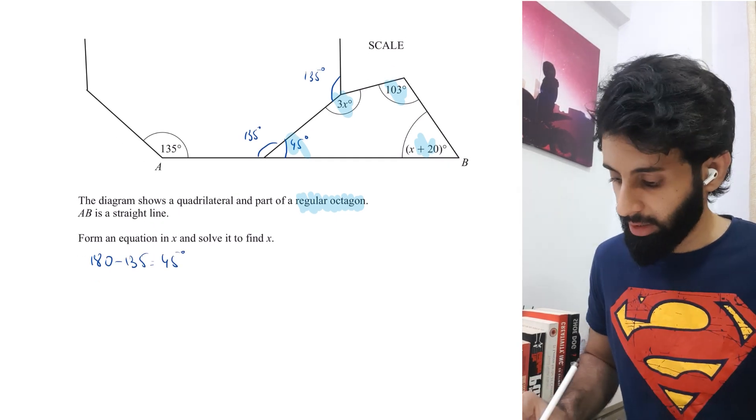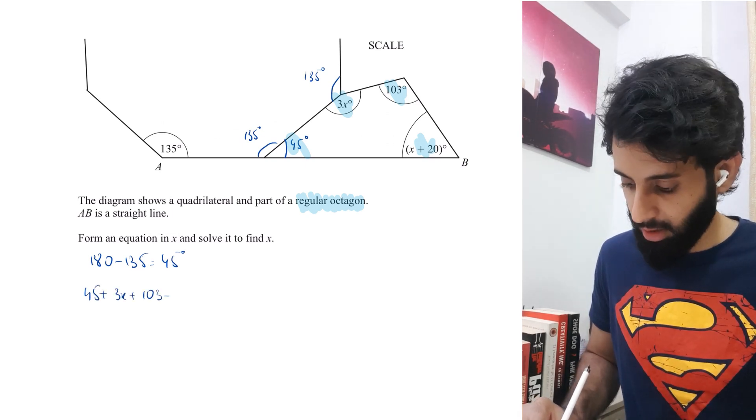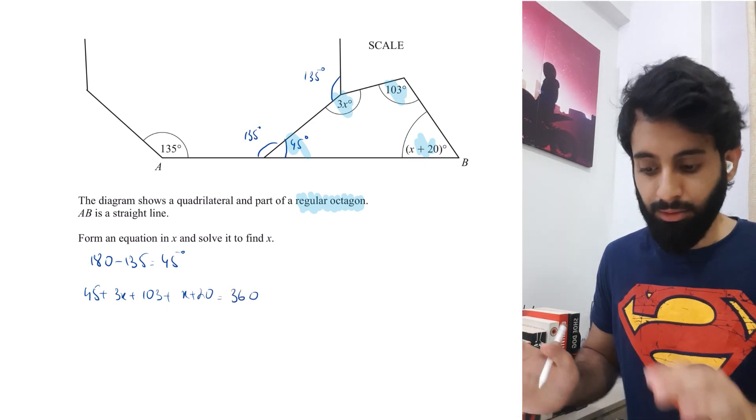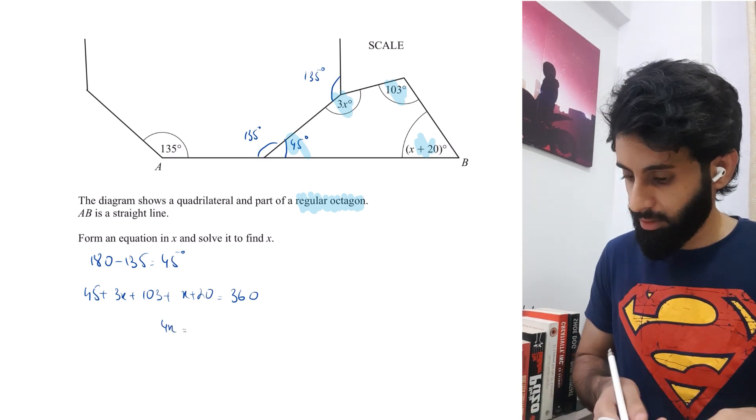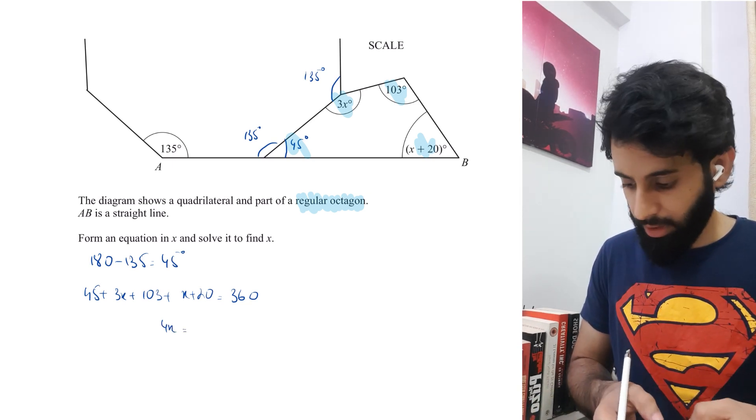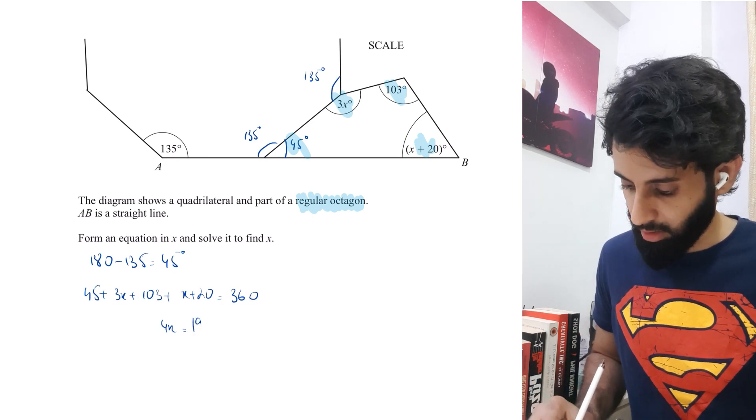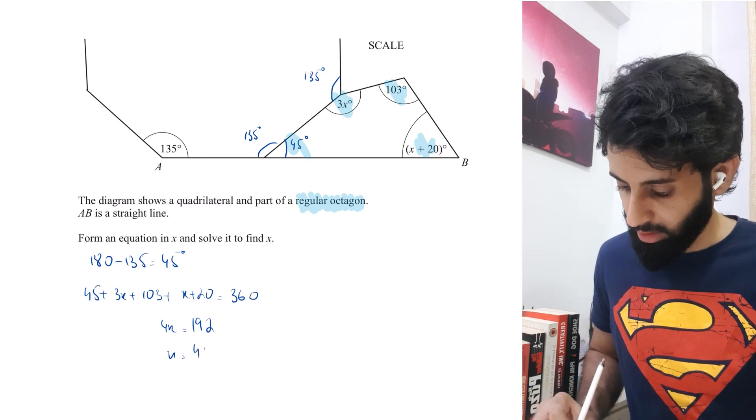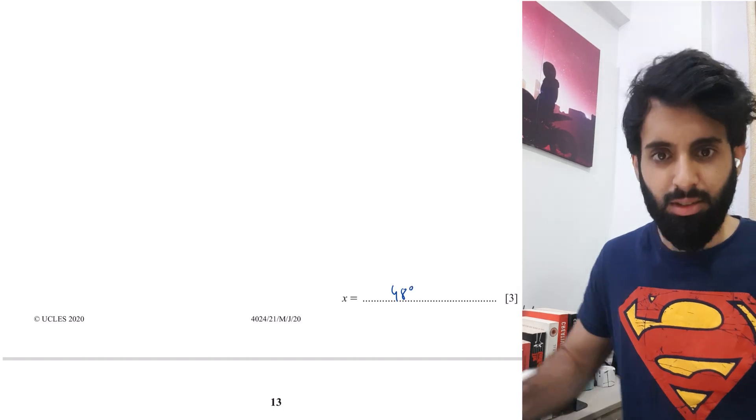So 45 + 3x + 135 + (x + 20) are the four angles of our quadrilateral, which equals 360. So 4x equals - let's work this out - 45 + 135 + 20, 360 minus answer is 192. x equals 192 divided by 4, which means x equals 48 degrees. You get three marks for that.